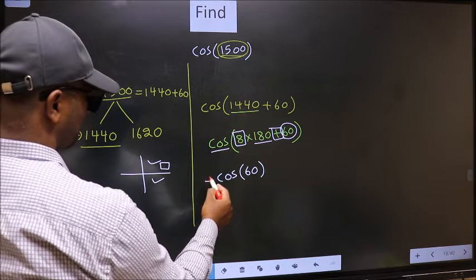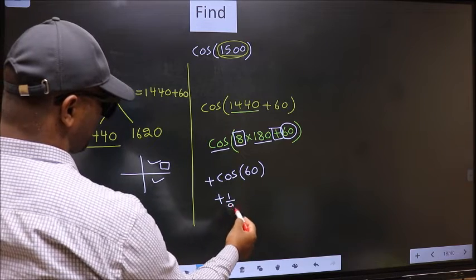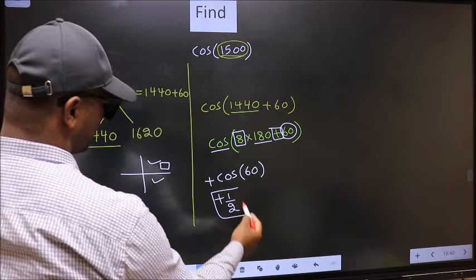So we should put plus. Plus cos 60 is 1 by 2. This is our answer.